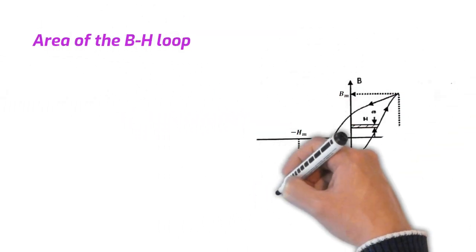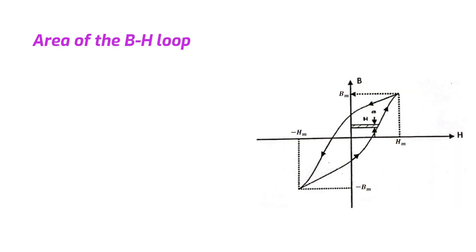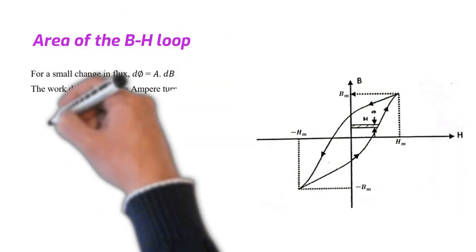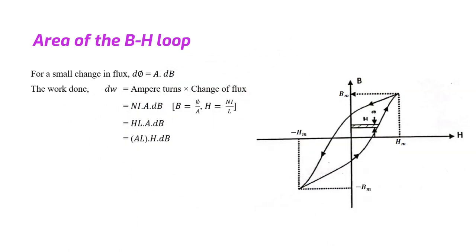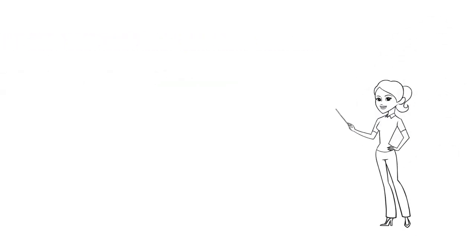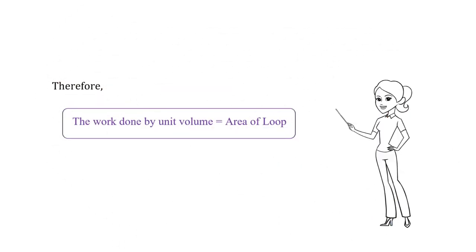Now we will derive an equation for the hysteresis loss. Taking the work done per cycle is W. It is obvious that the integration of dW, which is the small change of work, gives the total amount of work. dW is the product between the ampere turns and change of flux. Therefore, the following equation can be derived. This leads to the work done during one complete cycle is volume into area of the loop. Therefore, we can say that the work done per unit volume is equal to the area of the loop.